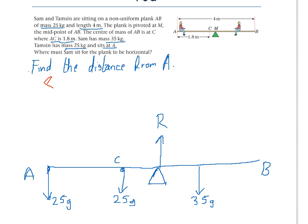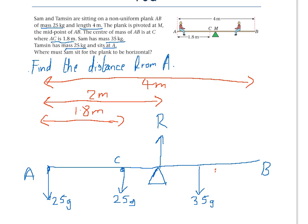Firstly the whole rod is 4 m in length. We know that the distance from A to the midpoint is 2 m. From A to C is 1.8 m. And we are asked to find the distance of Sam from A, so let's call that x. That's the distance we are trying to find.